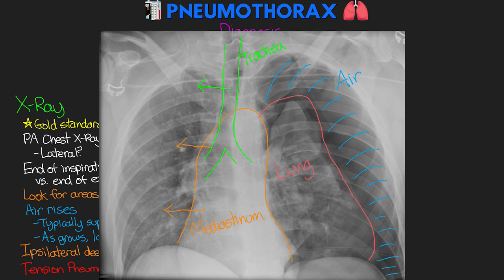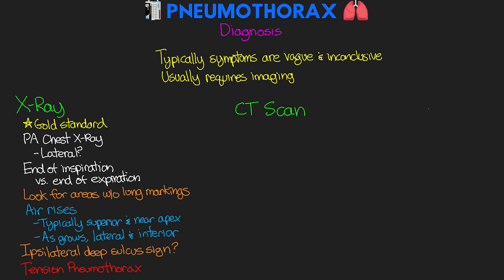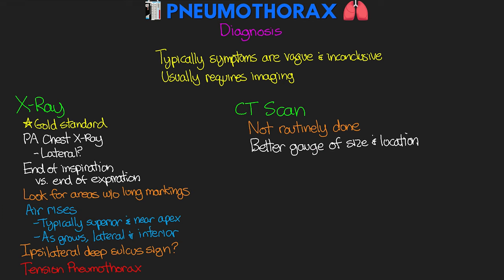In addition to x-ray, we can also do computerized tomography or CT scan. The CT scan is not something we routinely use, but it can give us a much better gauge of the location and size of the pneumothorax. Also, abnormal lung tissue can sometimes appear as a pneumo on x-ray, and for patients that are lying down — which is oftentimes a lot of our ICU patients — pneumos can be missed on x-ray. Our CT is going to be much more sensitive for identifying the pneumothorax, and as you can see in this example, it's pretty clear — the black area is going to be where the air is, and it's really obvious on CT. Lastly, we have ultrasound, which is a pretty quick method for checking for a pneumo, helpful in cases of trauma or emergency situations, and may actually be more sensitive than a chest x-ray.